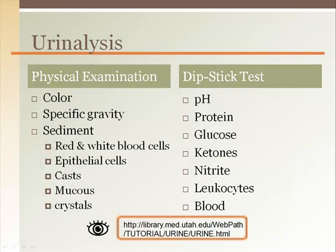A urinalysis includes both a physical examination of the urine and an evaluation of the solutes dissolved in the urine. The physical examination would include notation of the color and/or odor. Specific gravity is an indication of solute concentration and a person's hydration status. A specific gravity of 1.0 would equal water. Of course, urine has solutes, so it will always be more than one — about 1.002 to 1.035. The more concentrated the urine, the larger the number.